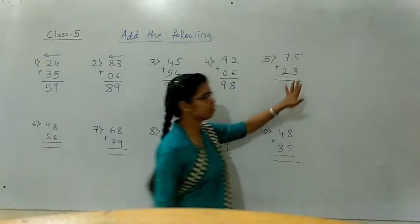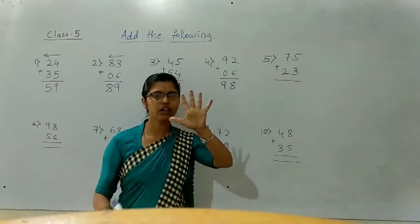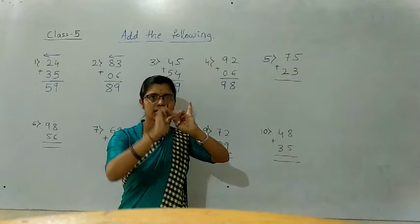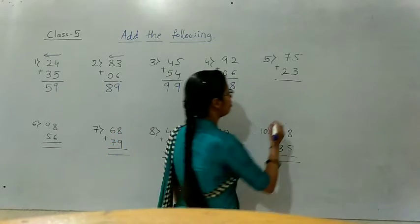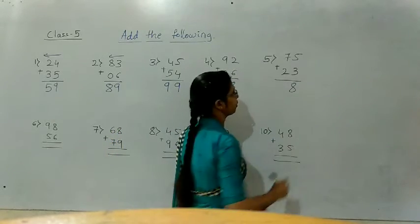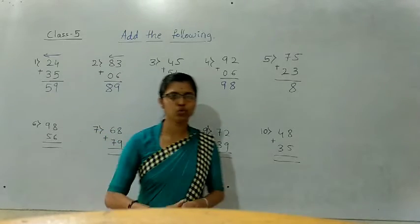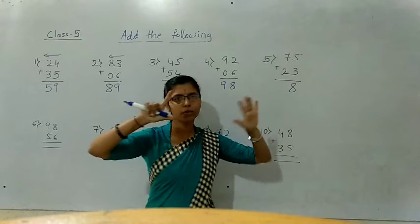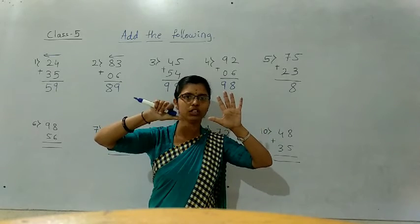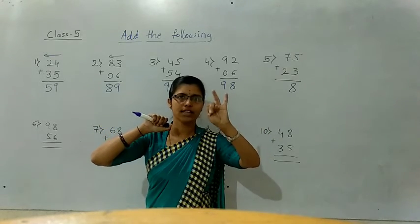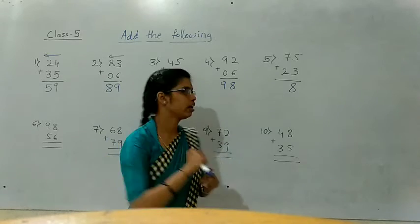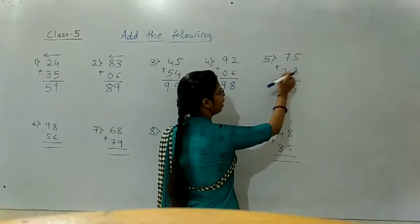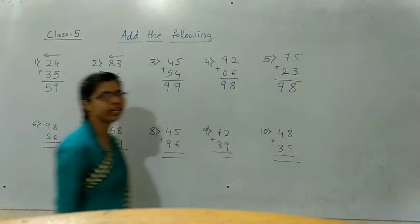5 plus 3 — hold 5 fingers. After 3: four, five, six, seven, eight. How much? 8. 7 plus 2 — hold 7 fingers. The below number is 2. After 2: three, four, five, six, seven, eight, nine. How much? 9. So 75 plus 23 equals 98.